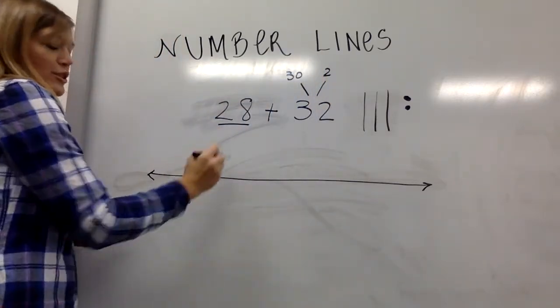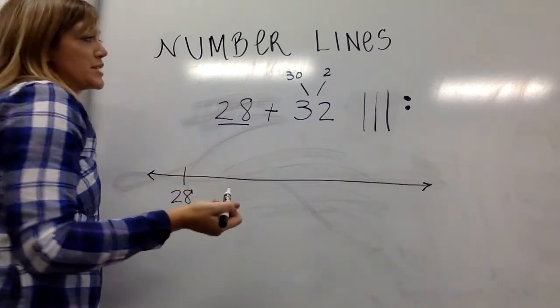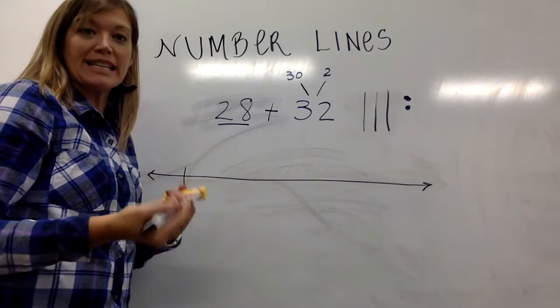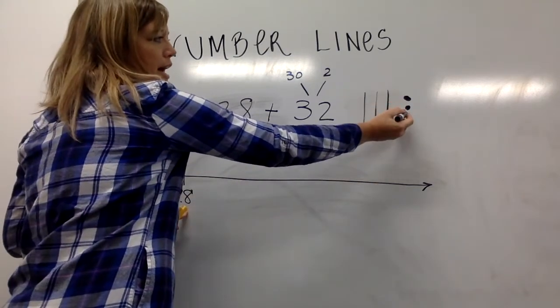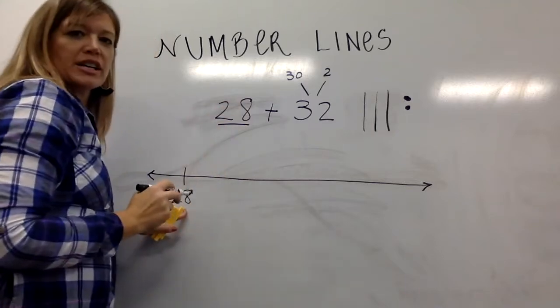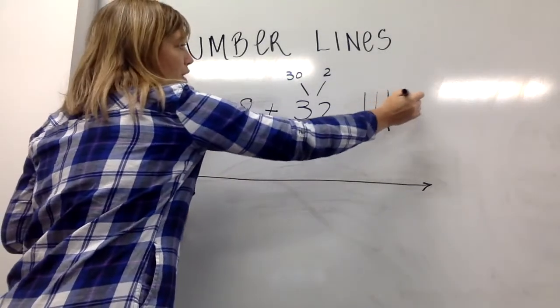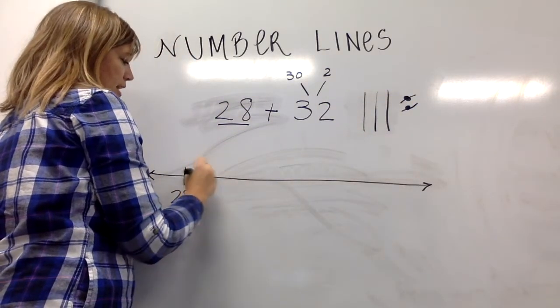Rather than taking those 32 jumps, I'm going to make it easier on myself and take bigger jumps at a time. We also think about friendly numbers—numbers that make it easy to count. If I'm at 28, I might go ahead and take my jump of 2 to see where I land, knowing that I'm probably going to get to 30. So I'm going to cross out 1, 2... 28, 29, 30.